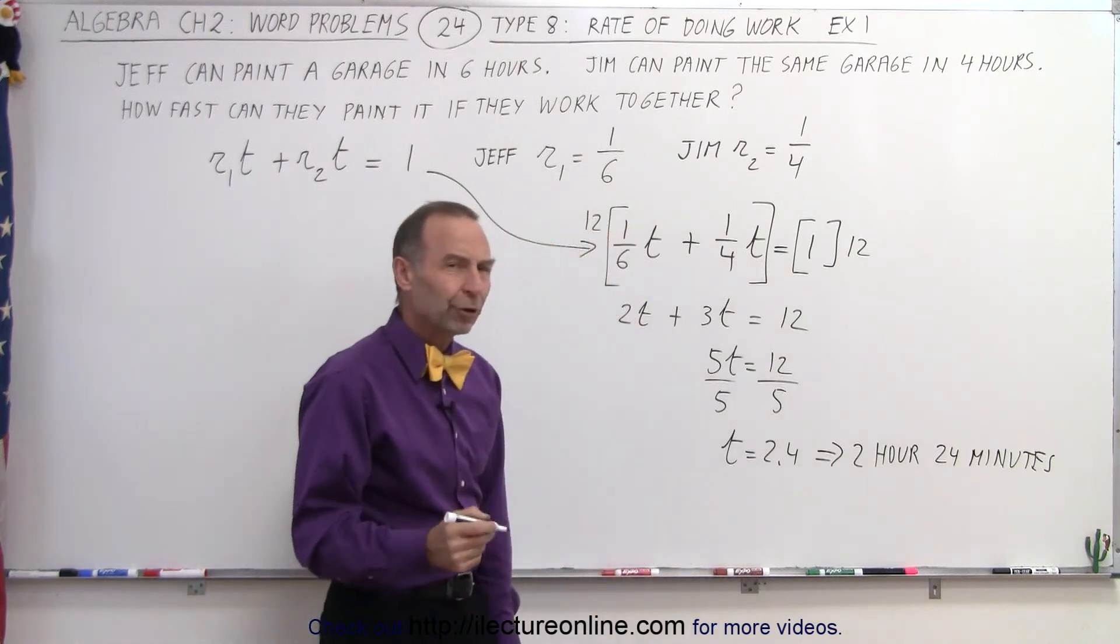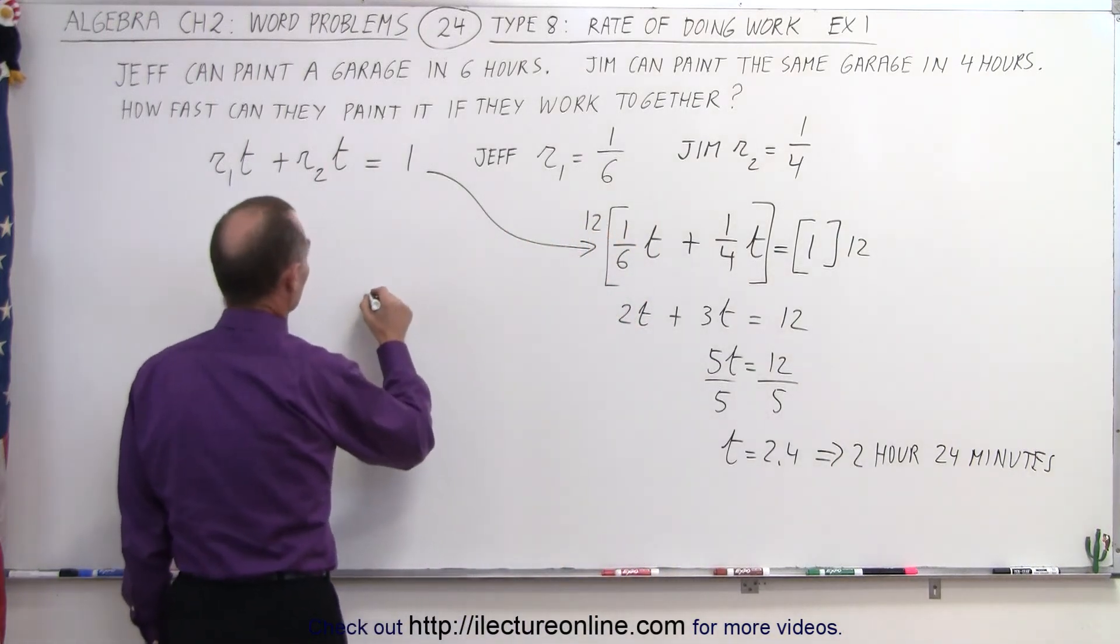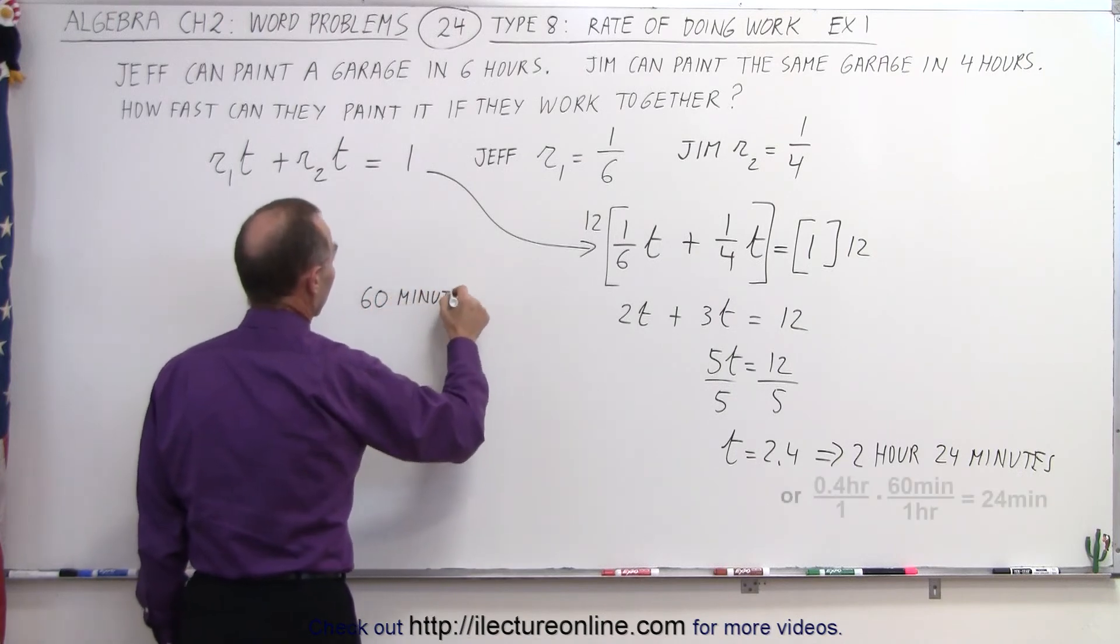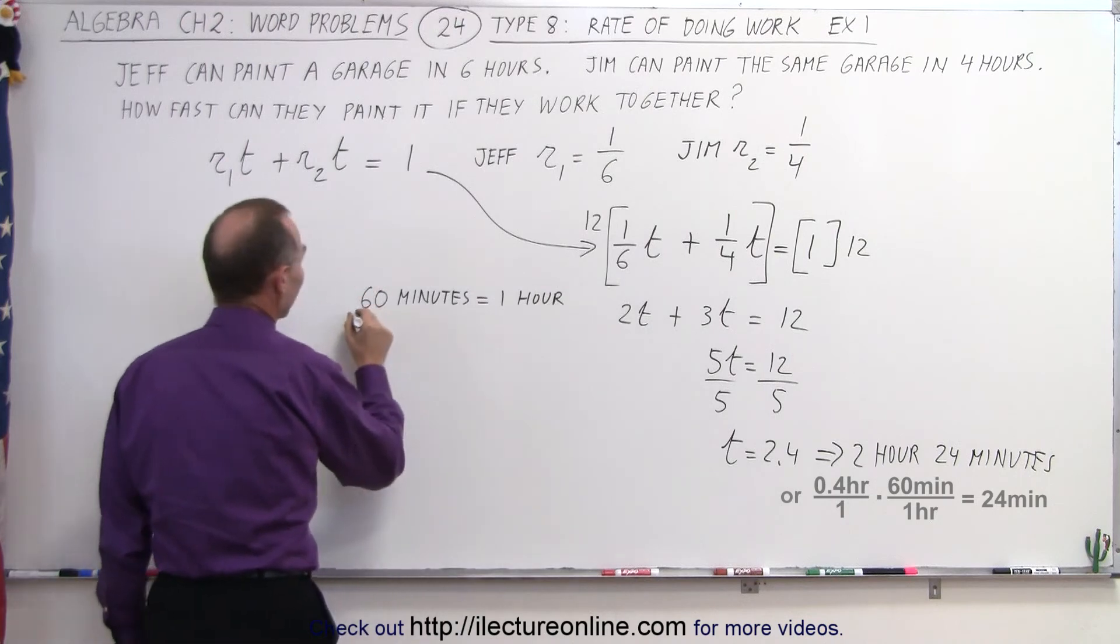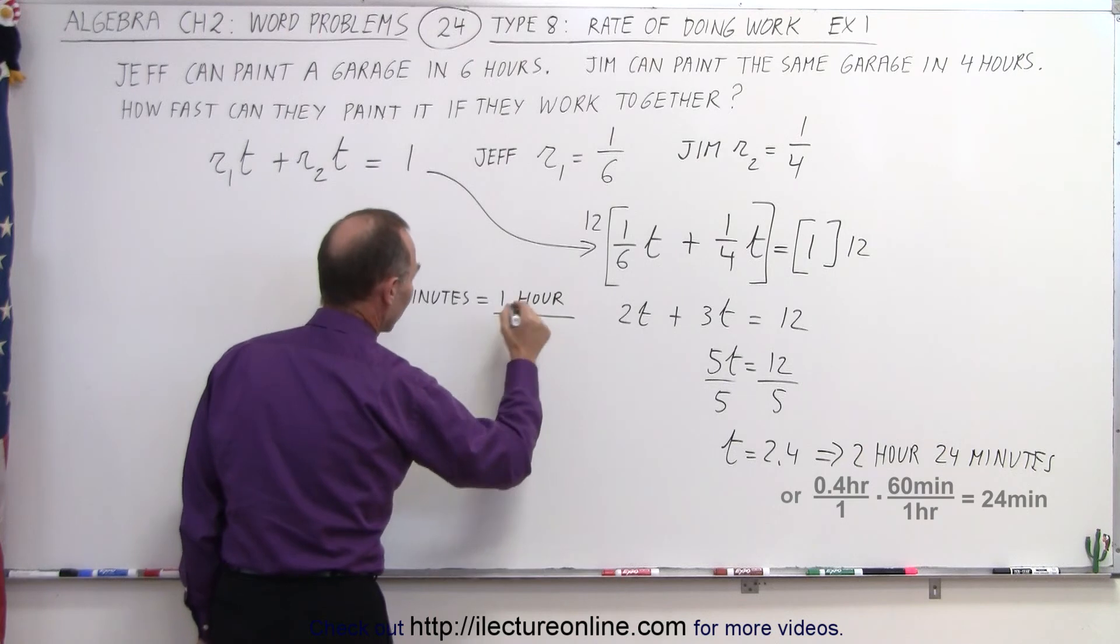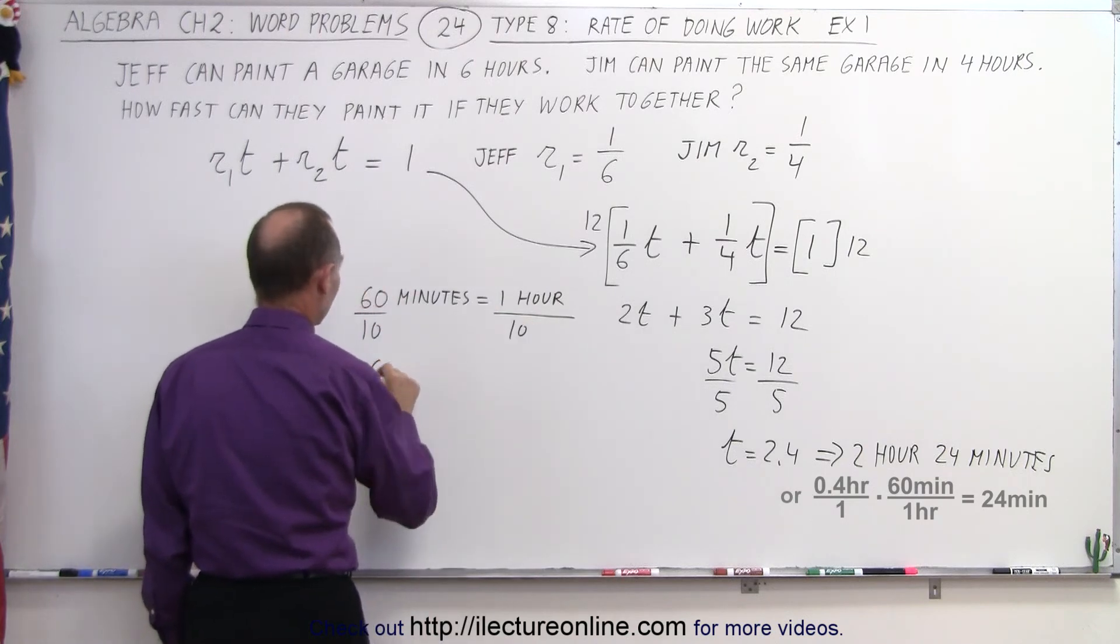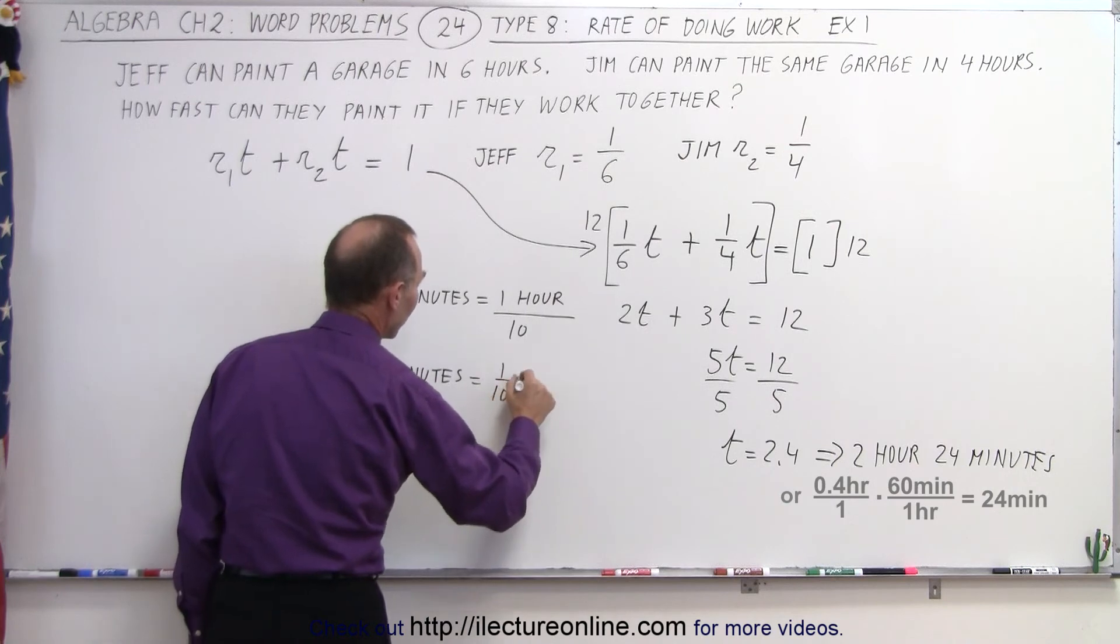If you're not sure how I converted the 0.4 to 24 minutes, let's take a look at here. So there's 60 minutes to 1 hour. So if you divide by 10, that means 60 divided by 10, 1 hour divided by 10, or 6 minutes equals 1 tenth of an hour,